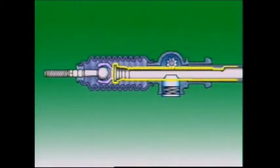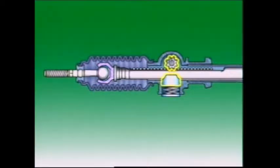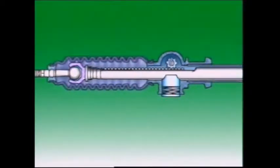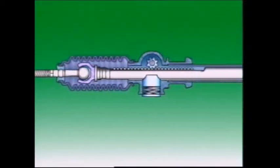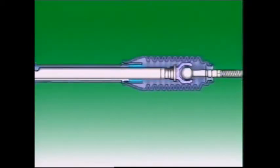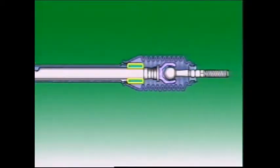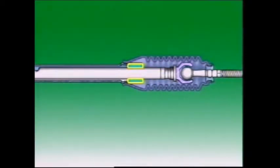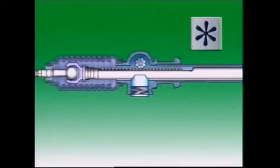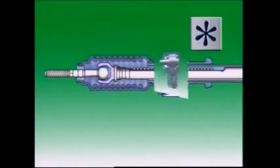The steering rack is supported at the pinion end by being sandwiched between the pinion and a spring-loaded rack guide yoke. This spring-loaded yoke ensures free play is eliminated between the gears while still allowing for relative movement. The rack is supported at the other end in the rack housing or tube by a bush, normally of nylon. Nylon is used because it has a low coefficient of friction and low wear rates.